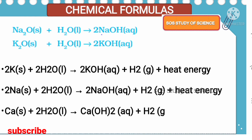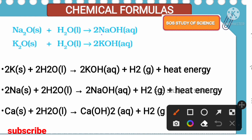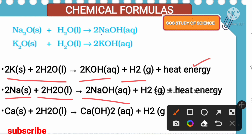What happens when metals react with water? When potassium combines with water, we get potassium hydroxide and hydrogen gas is released — this is an exothermic reaction with a huge amount of heat released. Similarly sodium reacts with water to form sodium hydroxide — also an exothermic reaction. Both potassium and sodium react very violently with water.